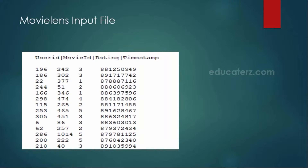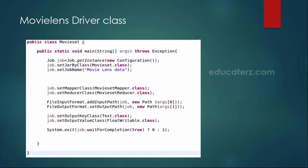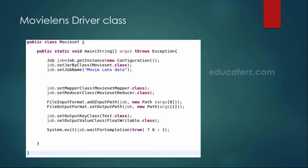For this purpose we require 3 classes: the driver class, mapper class, and the reducer class. This MovieLens driver class is similar to your word counter driver class — where it differs is only in the jar-by class name and the job name. Whatever job name you mention here, you can see it in the job history server. You also specify your mapper and reducer class names.